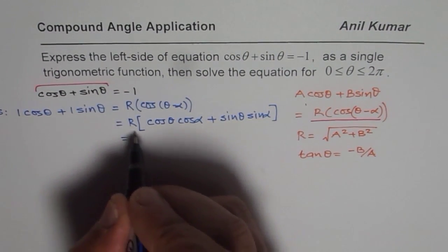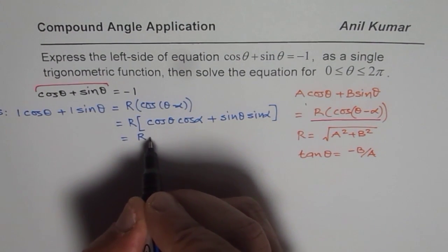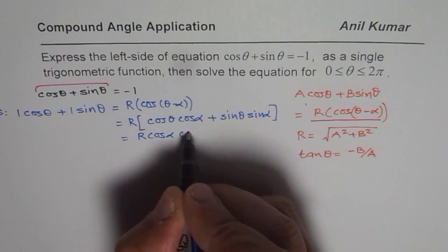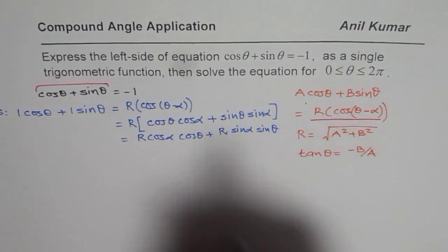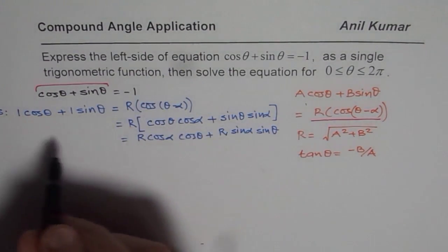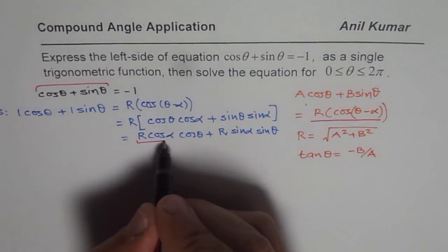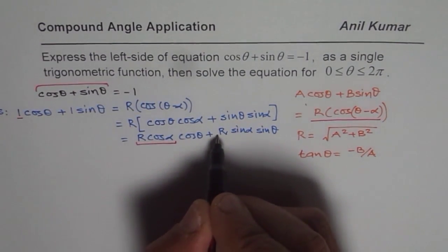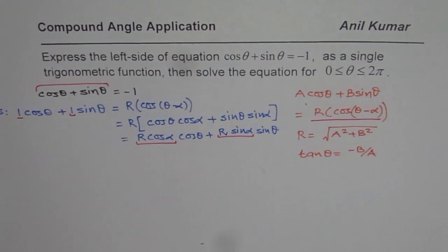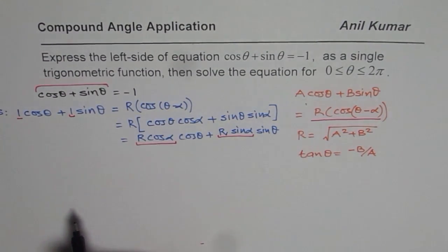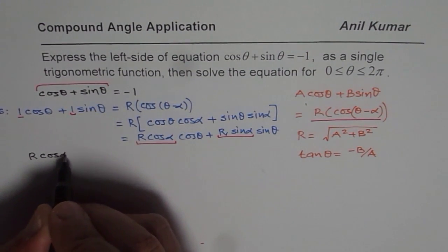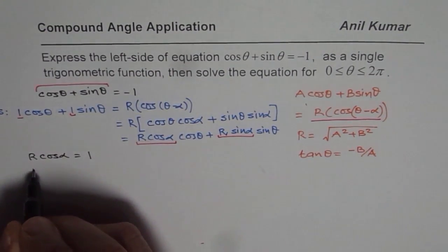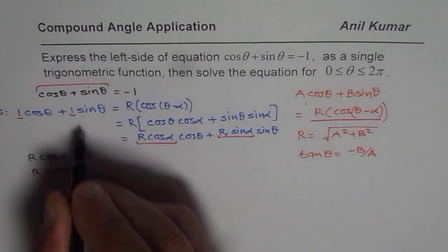Comparing the left side with the right side, we can see that r·cosα equals 1, and r·sinα also equals 1 in this particular case. So we took a simple equation — it could have any coefficients, but in our case both are 1. From here we get two equations: r·cosα = 1 (equation 1) and r·sinα = 1 (equation 2).